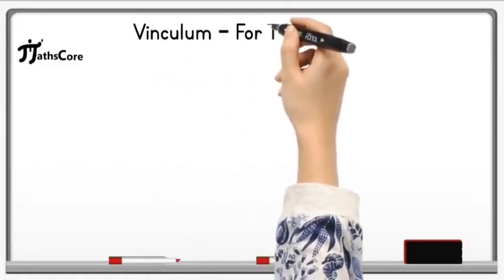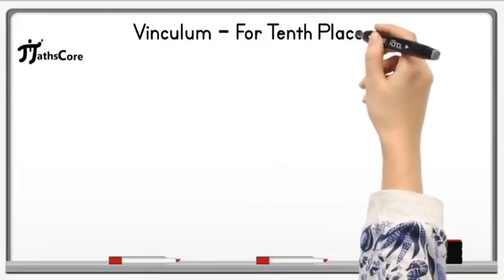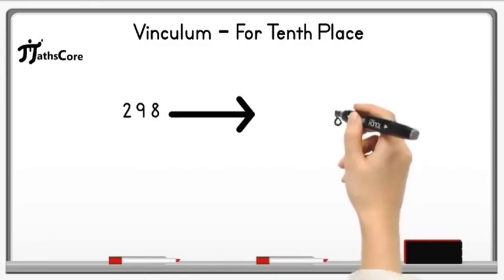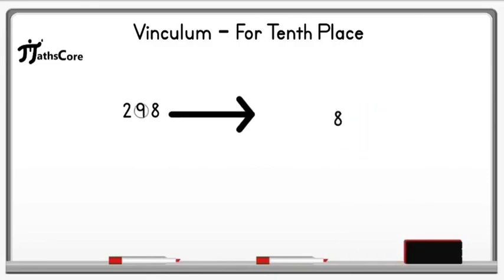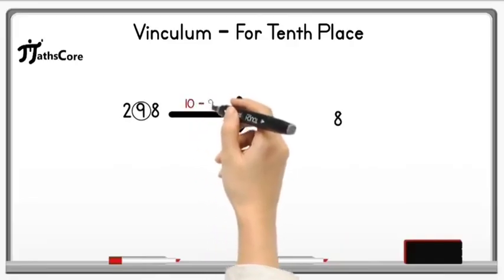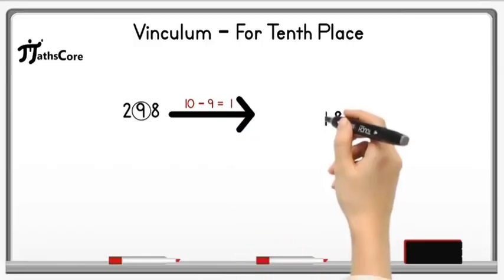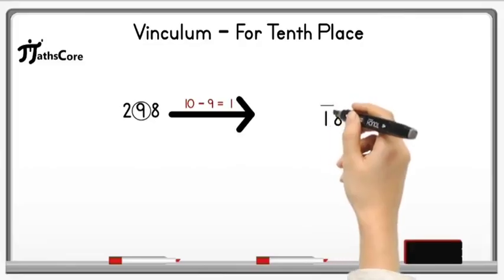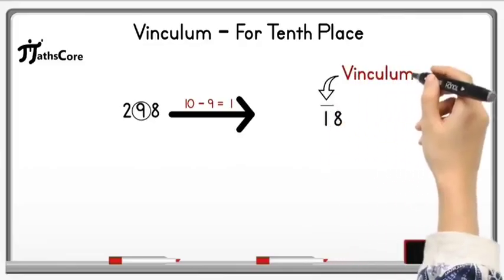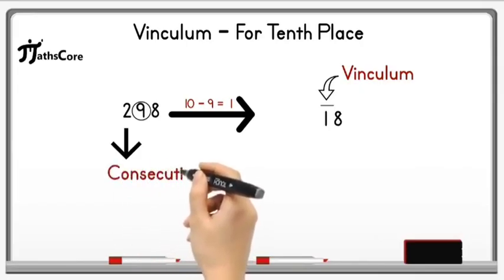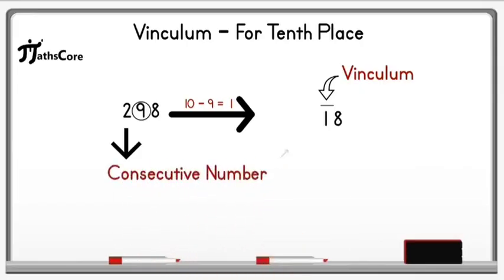Now let's take some examples on vinculum for the tens place. The example is 298. First, write down the unit place digit 8. Then subtract the tens place digit 9 from 10: 10 minus 9 equals 1. Write this 1 before 8 and place an overline on it, which is vinculum. Then find the consecutive number of 2, which is 3, and write 3 before 1.